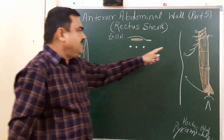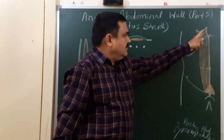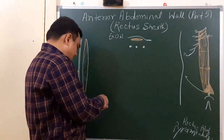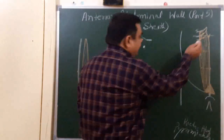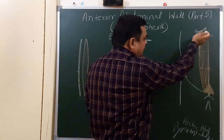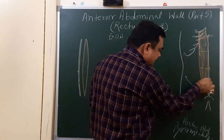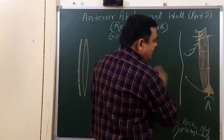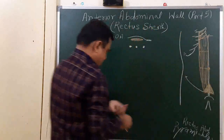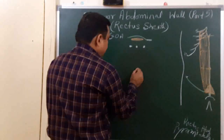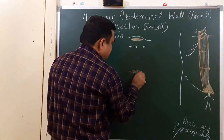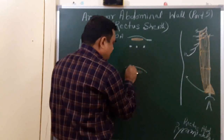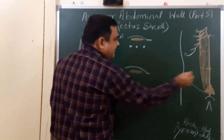Now, if you look at a section at the level between the costal margin and the arcuate line — this is the arcuate line level — from here to here, if you look at a section at any level, you will find the rectus abdominis muscle, the external oblique aponeurosis, and the linea alba.